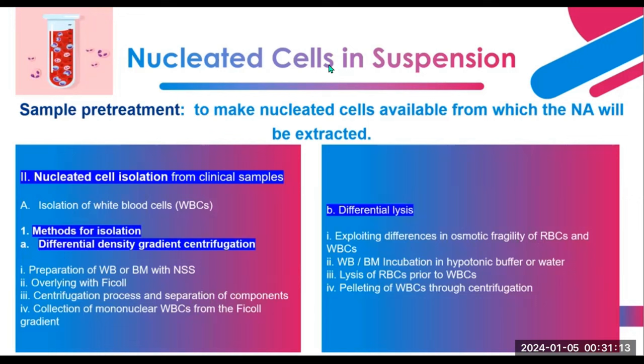When processing nucleated cells in suspension, sample pretreatment is needed to make nucleated cells available for extraction. When isolating WBCs from clinical samples, two methods of isolation are used: differential density gradient centrifugation (DDGC) and differential lysis. For DDGC, whole blood or bone marrow with NSS is prepared, overlaid with ficoll, and then centrifugation follows, resulting in separation of components — and the mononuclear WBCs from the ficoll gradient are collected.